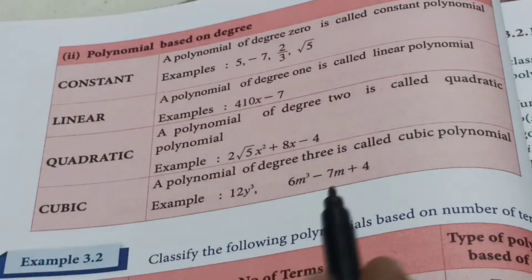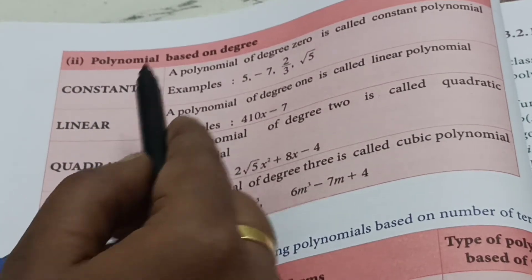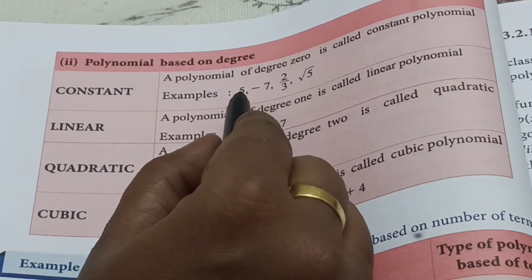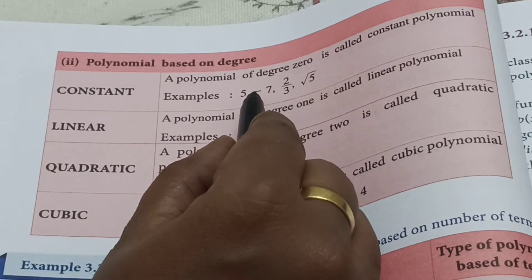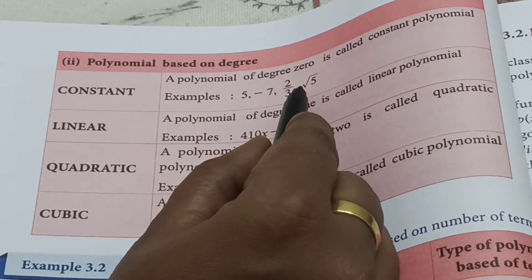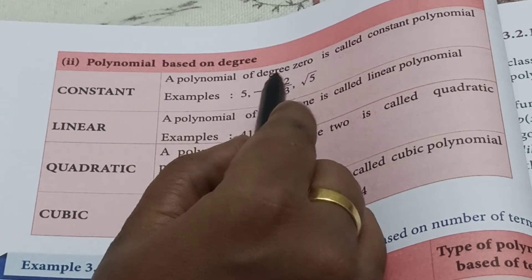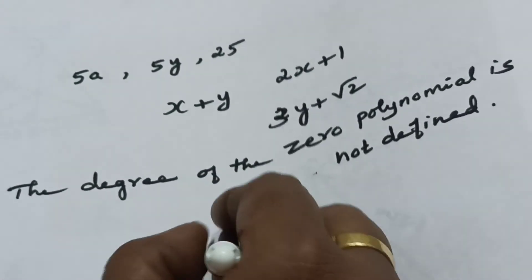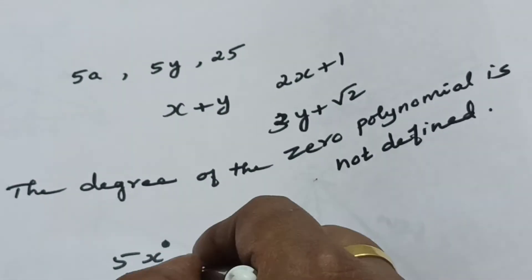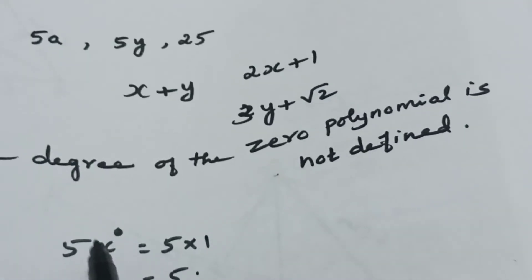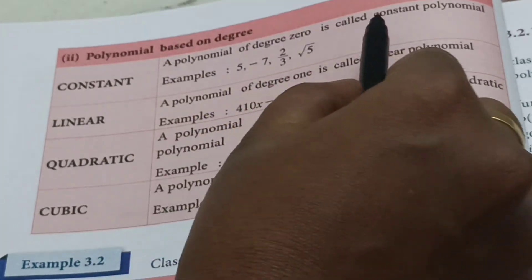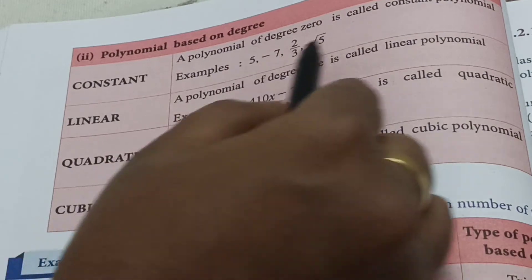The second subdivision is polynomials based on degree. The first type is constant polynomial. A polynomial of degree 0 is called a constant polynomial. For example: 5, 5 minus 7, 2/3, or square root of 5. Here, 5 can be written as 5 times X power 0. Since X power 0 equals 1, the degree is 0. So constants are degree-0 polynomials.